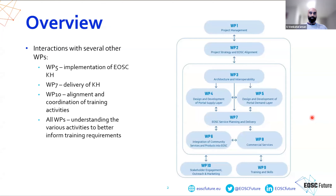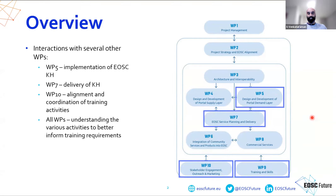Here's a brief overview of the work packages in EOSC Future — a lot of this may have been introduced in previous sessions. I'll really be talking about Work Package 9, which covers training and skills, and where a lot of the work regarding the Knowledge Hub comes from. It's not in isolation — Work Package 5 will actually implement the Knowledge Hub, while WP9 has been providing the specifications. There's also engagement with Work Packages 7 and 10.